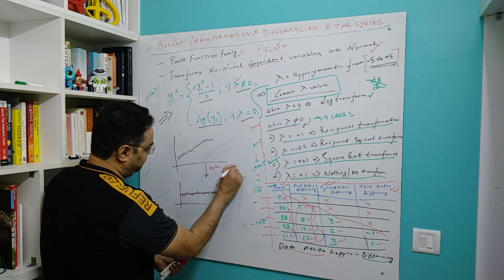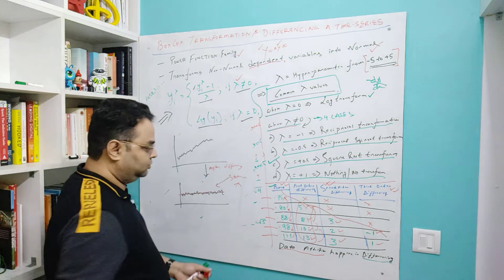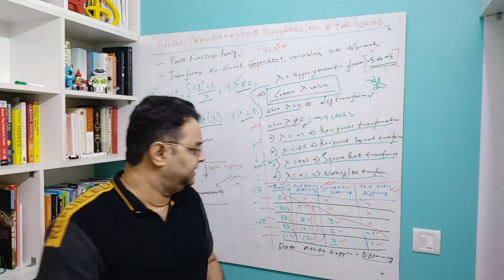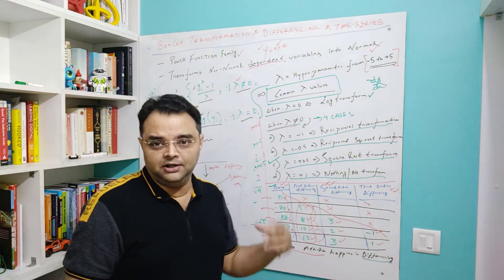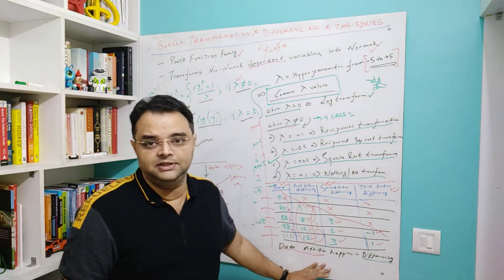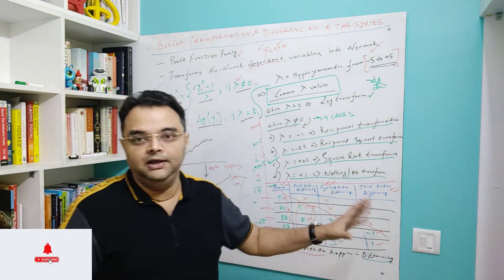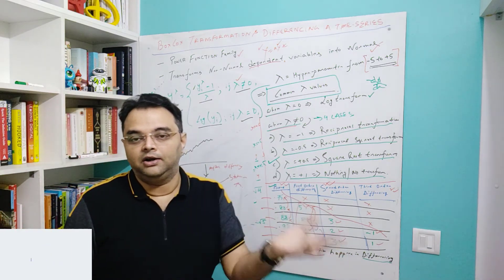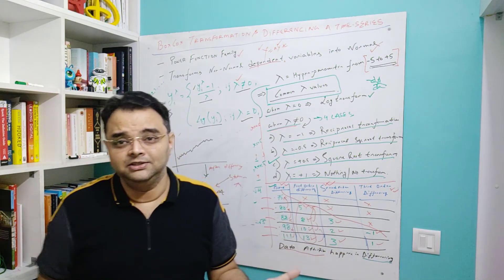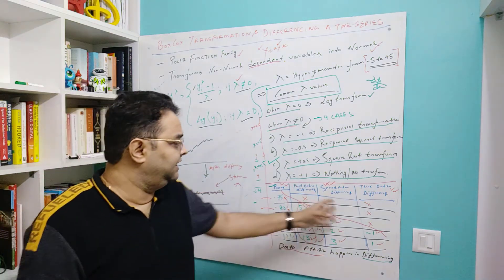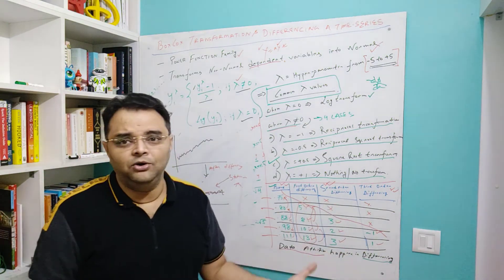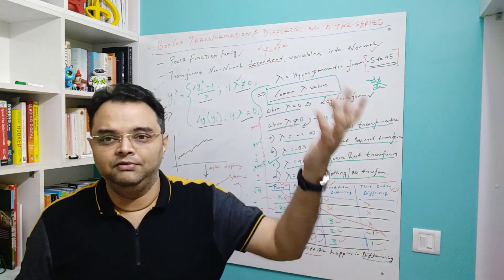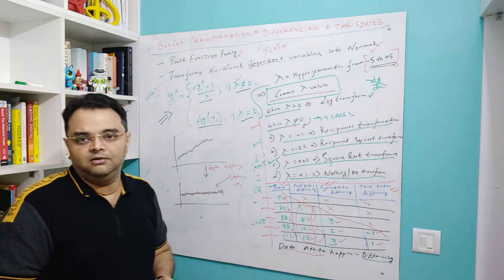The question is how to decide which order of differencing to apply. First try the first-order differencing, plot the graph, run the ADF and KPSS tests, and check whether the p-value is within the 0.05 threshold to determine stationarity. If not stationary, apply second-order differencing. Going beyond third-order differencing is not recommended — if that isn't sufficient, your time series may not be suitable for forecasting.